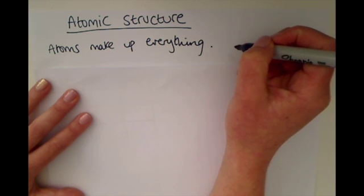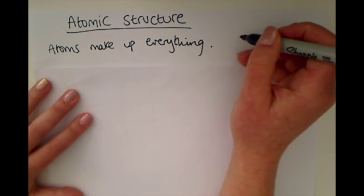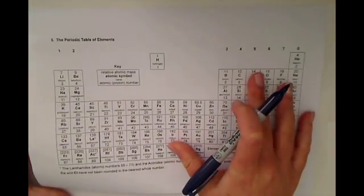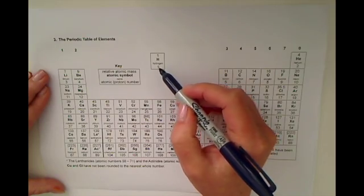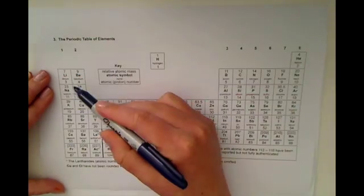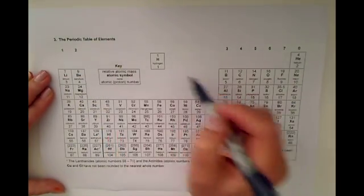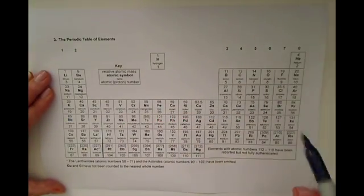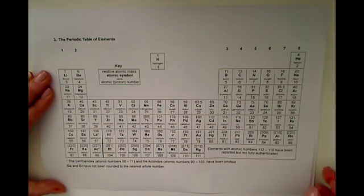There are over a hundred different types of atoms, and we call these elements. These are displayed in the periodic table. For example, the smallest atom you can get is hydrogen, and as the elements go from left to right, the atom size gets bigger — we'll explain why in a minute. There are over a hundred different types of atoms, which we call elements, and we'll come back to this shortly.